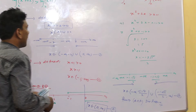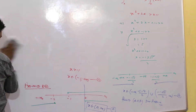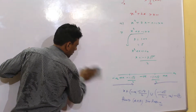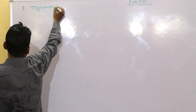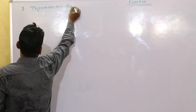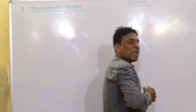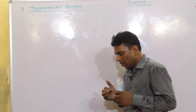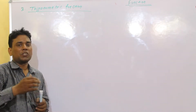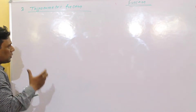अब हम trigonometric functions की तरफ move करते हैं। Six basic trigonometric functions हैं: y = sin x, y = cos x, y = tan x, y = cot x, y = sec x, and y = cosec x. हम एक-एक करके सबका graph देखेंगे, उनकी properties, domain, और general solution भी देखेंगे।